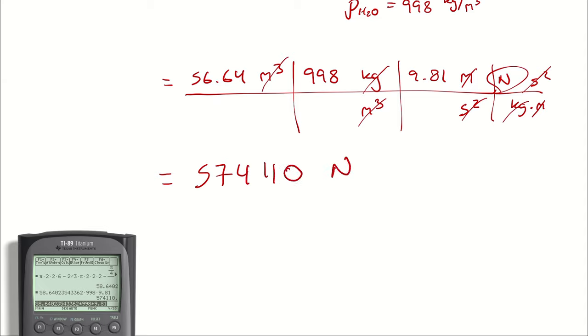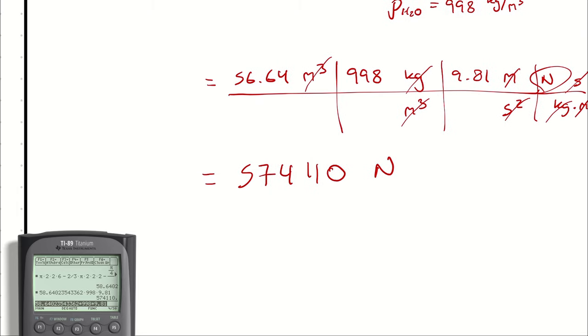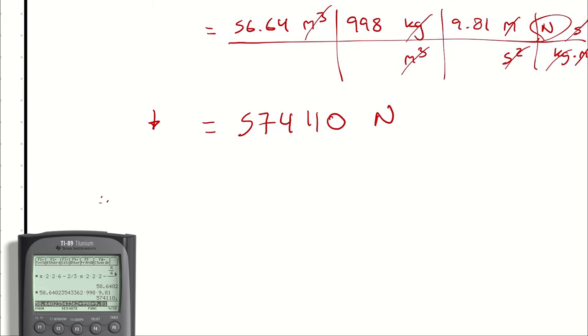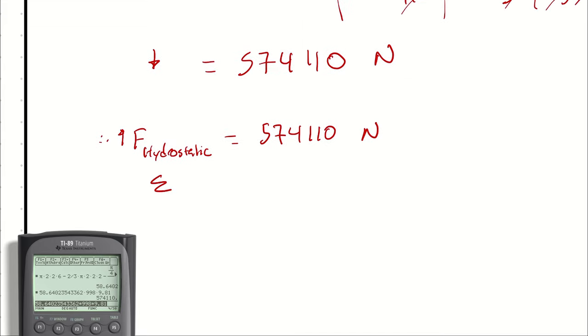That force is the weight of the water that is displaced in the downward direction. Therefore, the hydrostatic force is going to be in the upward direction with a magnitude of 574,110 newtons. I know that the sum of forces in the y direction has to equal zero. Therefore, the forces up must equal the forces down.